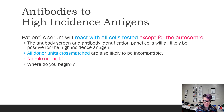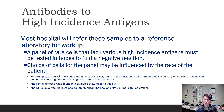If you crossmatch, it's likely that all donor units will be incompatible and you don't have any rule-out cells. So how do you deal with this? Most hospital labs cannot deal with these, so they would refer them to a reference lab.